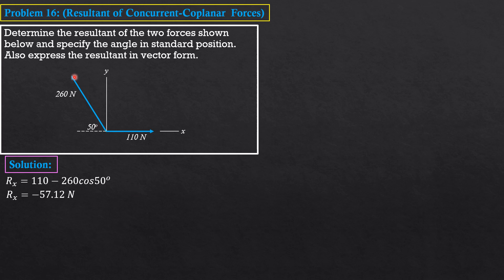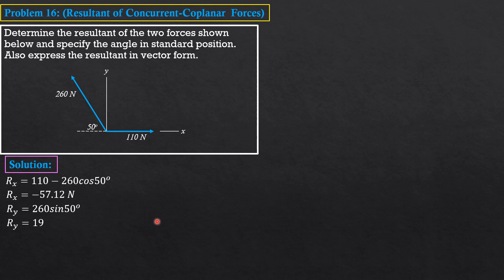For the vertical component: 110 has no y-component since it is horizontal. So Ry = 260 sine 50°, which equals 199.2 Newtons. Therefore we can now compute the magnitude of R as the square root of Rx² plus Ry².